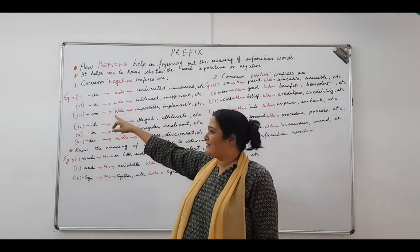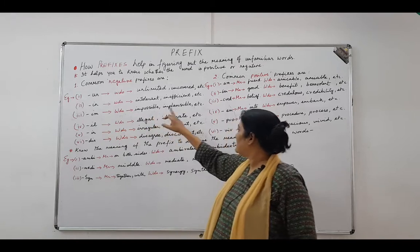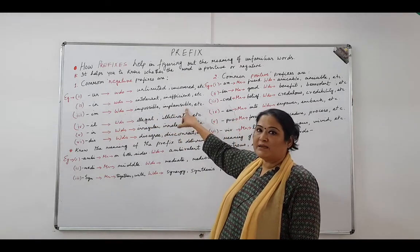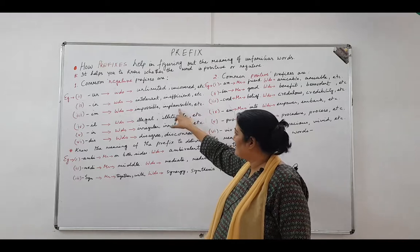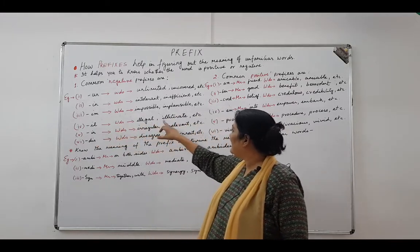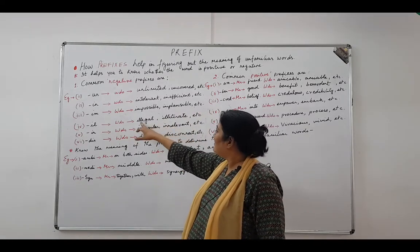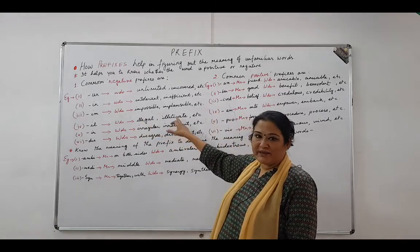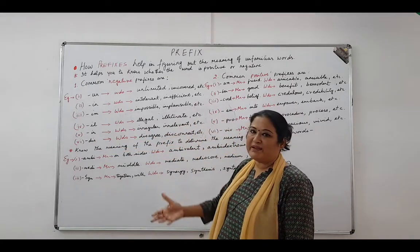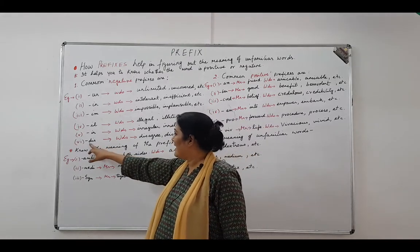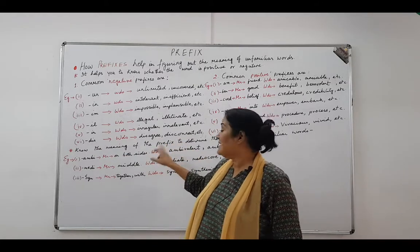Similarly with 'in' and 'im' as prefixes: intolerant, inefficient; with 'im': impossible, implausible. Implausible means something which is beyond reasonable — we cannot reason it out, and hence it is implausible. Then 'il' gives you 'illegal' and 'illiterate': illegal means done without the consent of law, and illiterate means without being literate. Then 'ir' gives you 'irregular' and 'irrelevant' with the same meaning in context. And then there is 'dis', which gives you 'disagree', 'disconnect', 'discontent'.